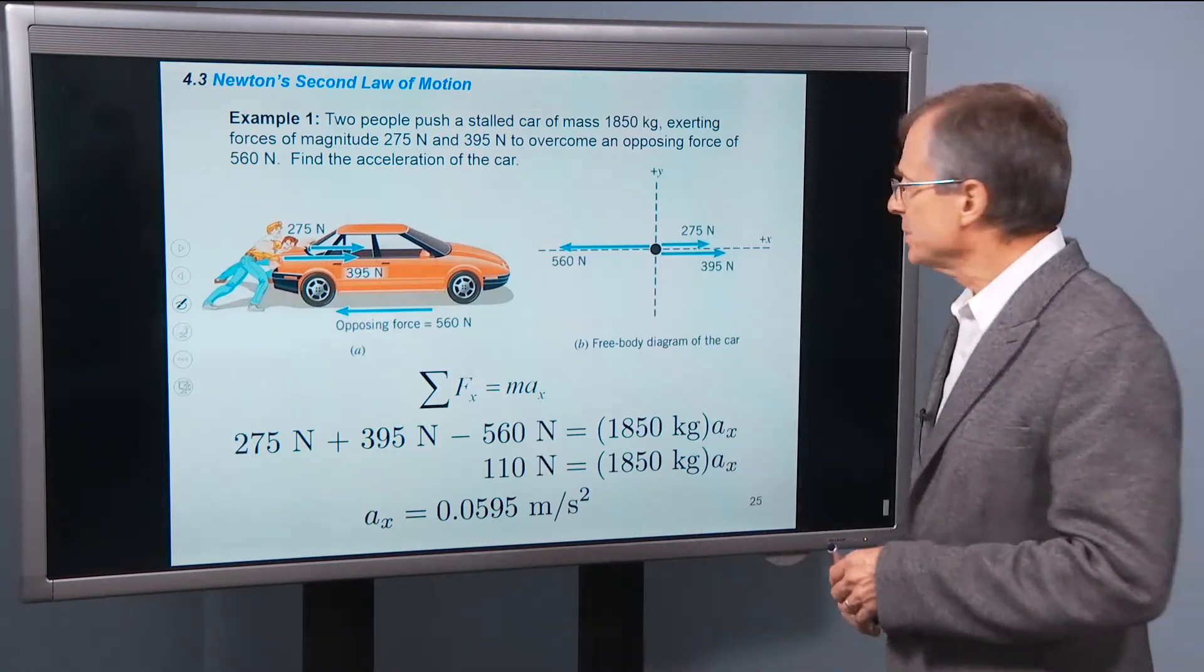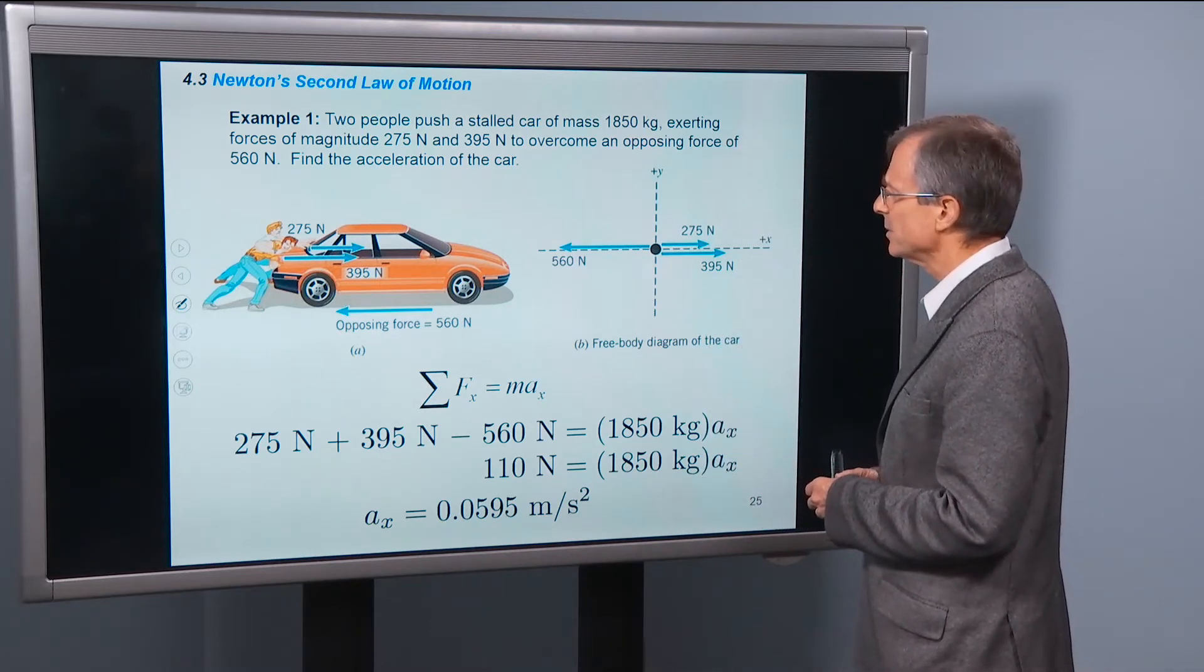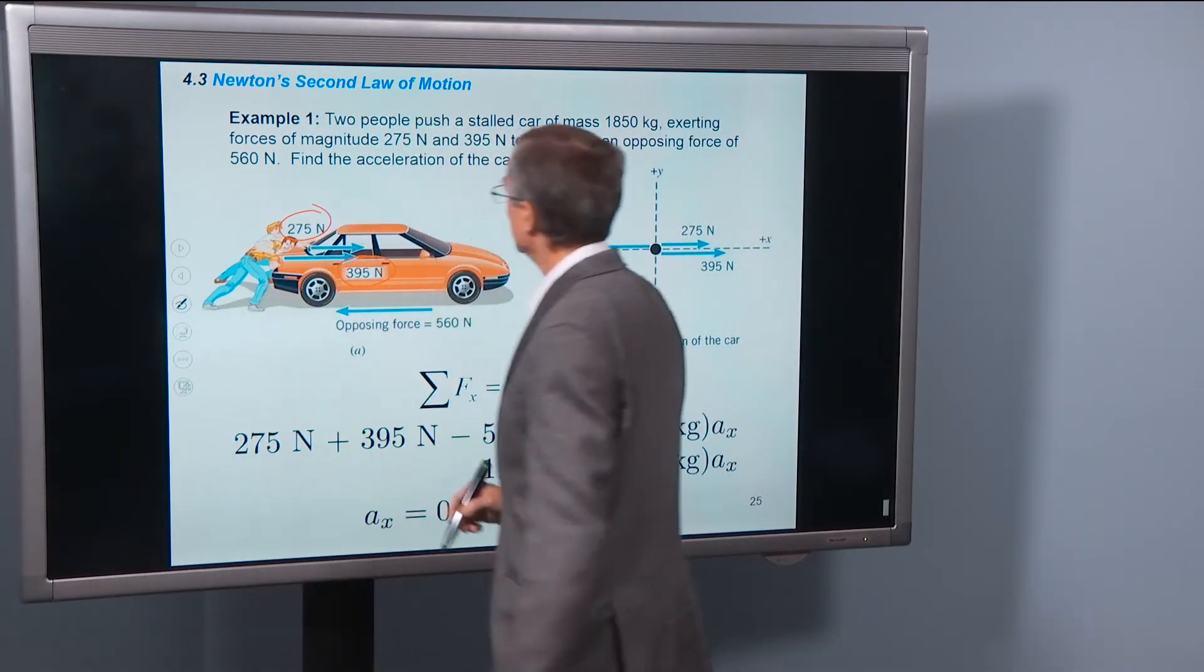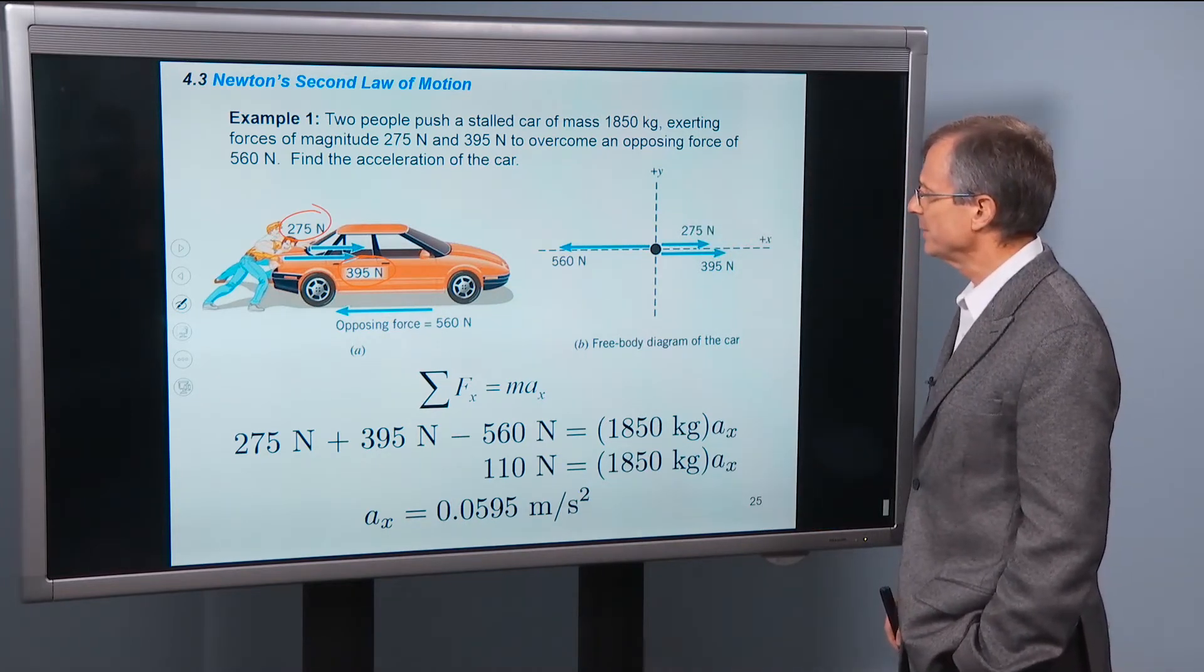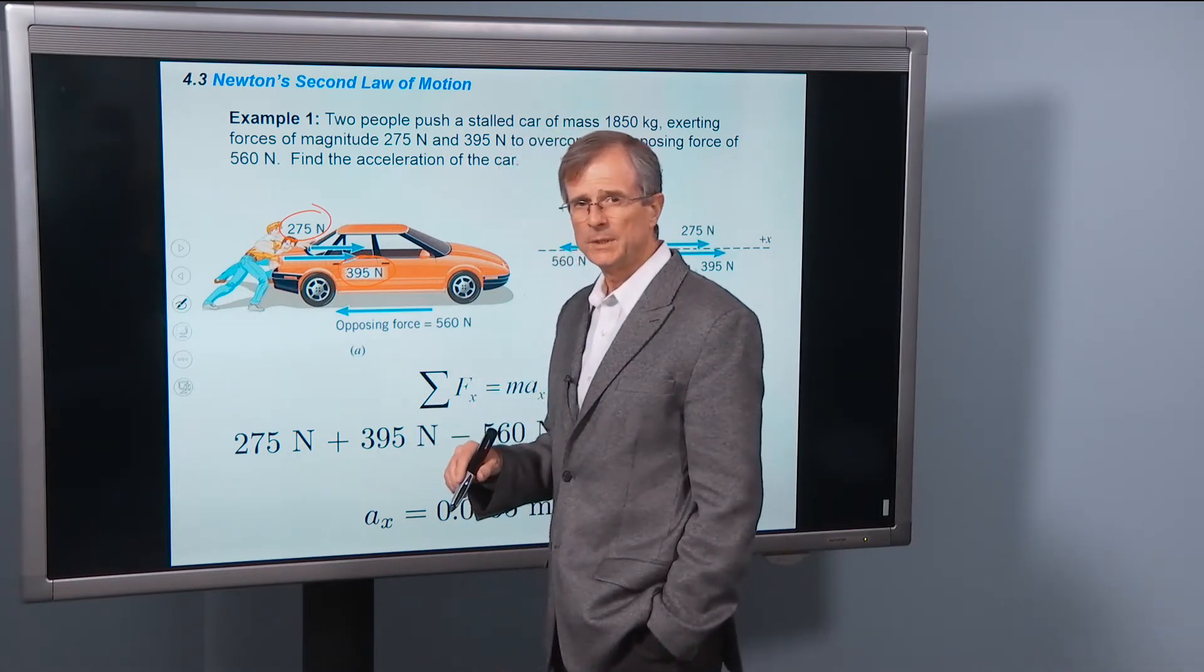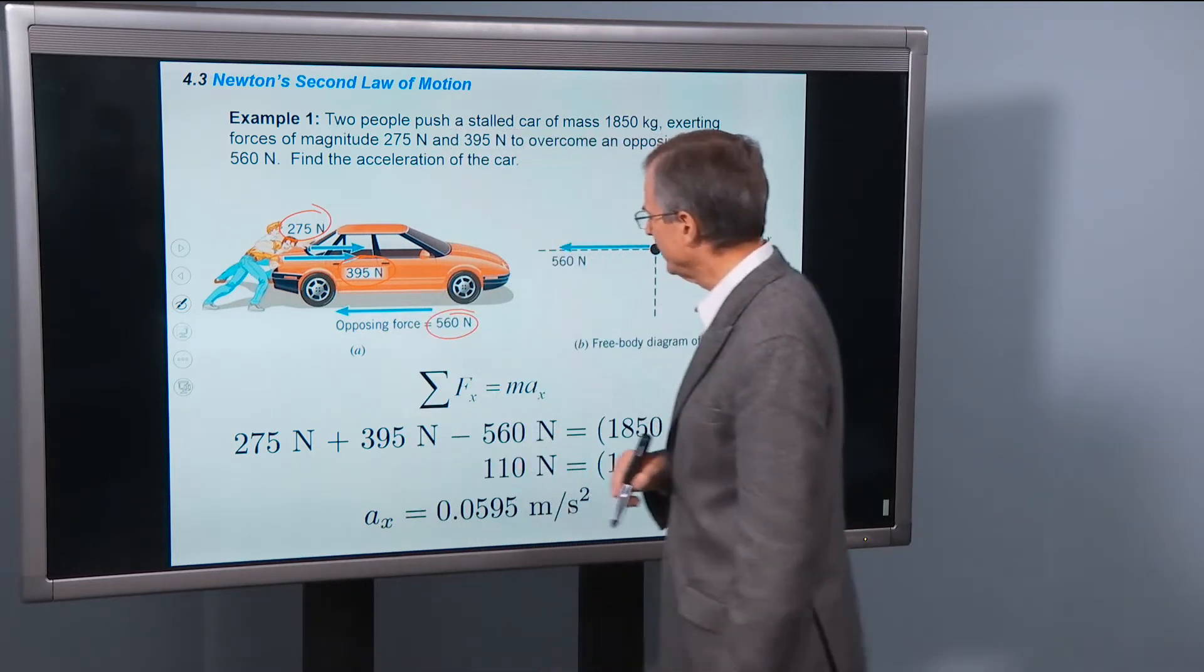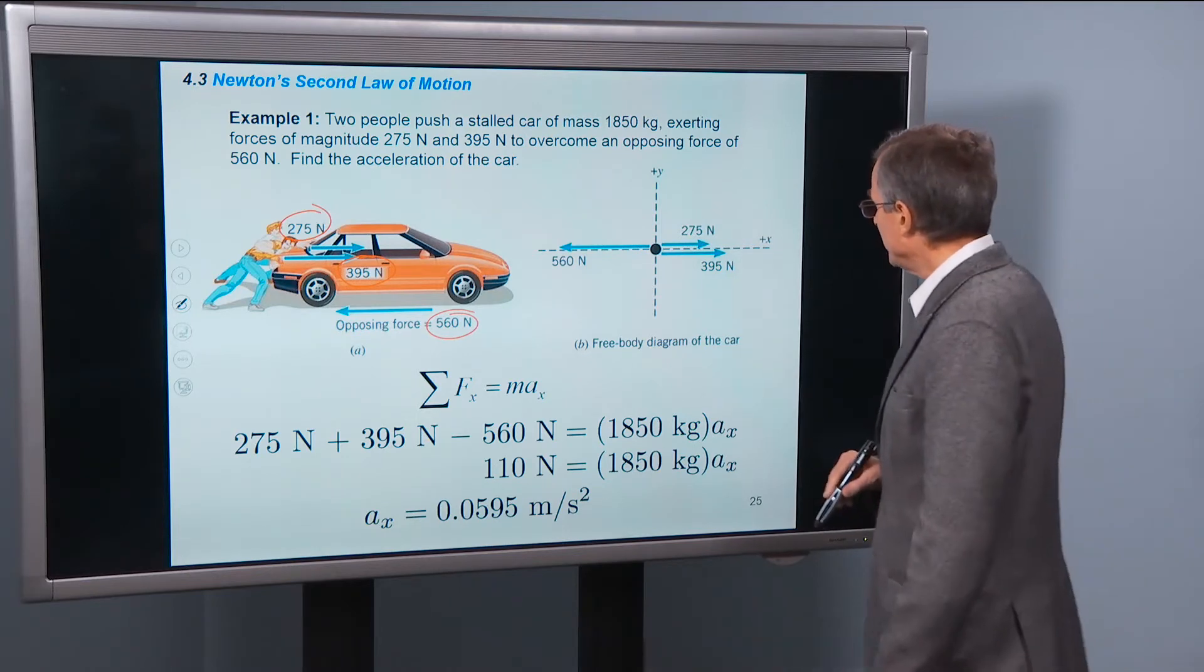Okay, let's do some examples. Two people push a stalled car, mass 1850 kg, exerting forces of magnitude 275 N. And the other guy's pushing a little harder, 395 N, to overcome an opposing force of 560 N. So that could be from the force of the friction of the tires on the road. So that's the opposing force of 560. Find the acceleration of the car. Well, fine. We can do that.